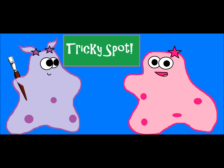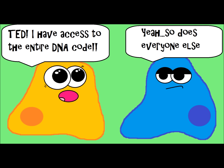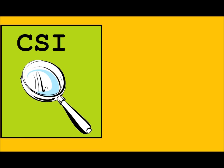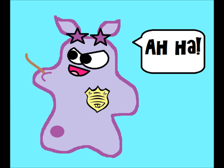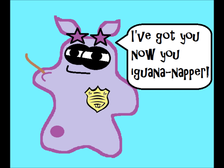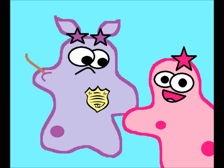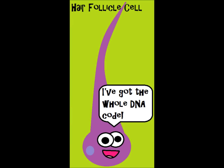One thing that students sometimes don't understand is that all of the cells in your body — every single cell — has your entire DNA code. So if you've ever watched shows like CSI or Law and Order, you know how a criminal can leave behind a hair sample, a skin sample, or a blood sample, and they can sometimes link that to find the criminal. The idea is that even leaving behind a hair that has a follicle cell, you can get the entire DNA code because every cell has all of your DNA.